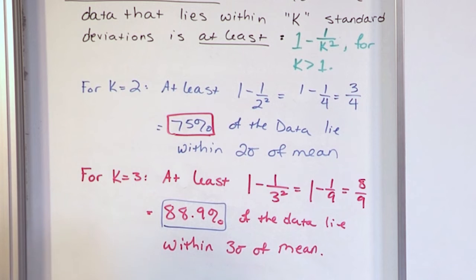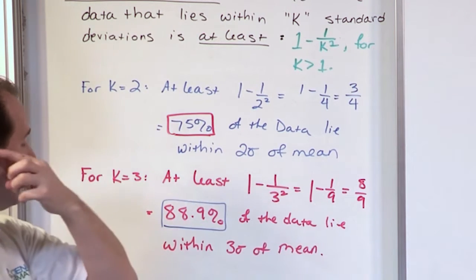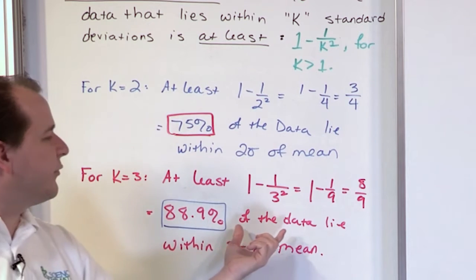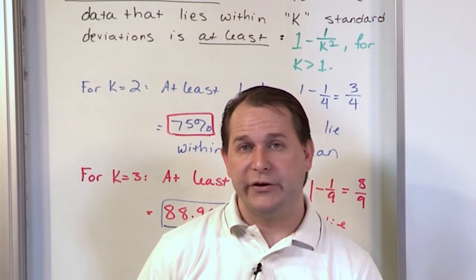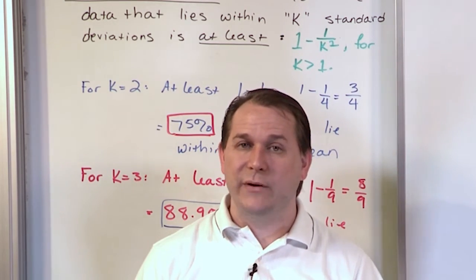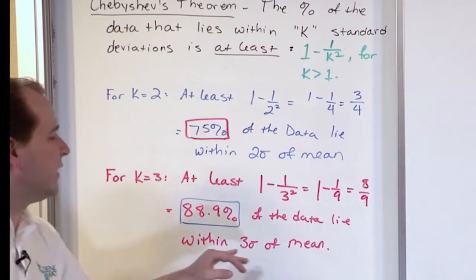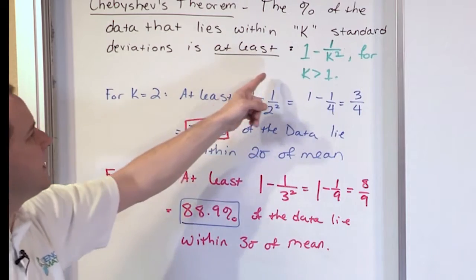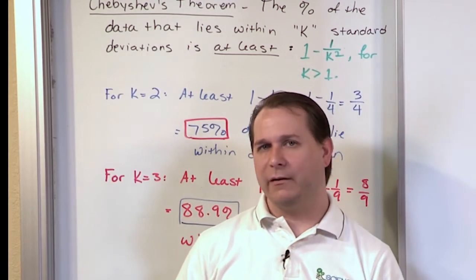For three standard deviations, it's at least 1 minus 1 over 3 squared, which is 1 minus 1 ninth, which is 8 ninths — about 88.9%. So 88.9% of the data lies within three standard deviations of the mean, but that's a minimum — it could be 90%, 92%, and so on. For the normal bell-shaped distribution, three standard deviations was actually 99.7%. One sigma doesn't make sense for Chebyshev's theorem because it really only works when k is greater than one, not equal to one.